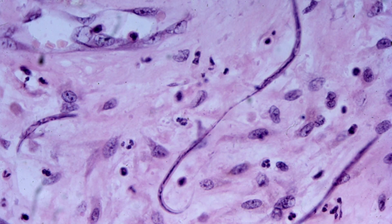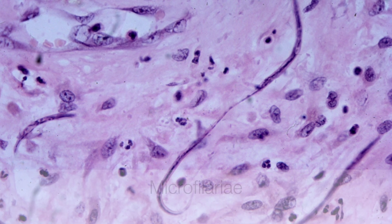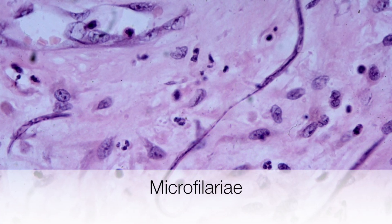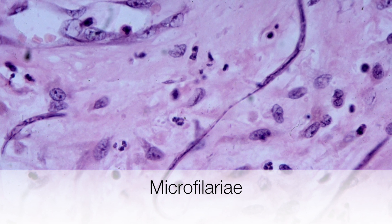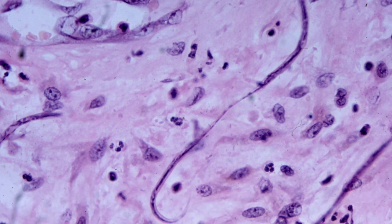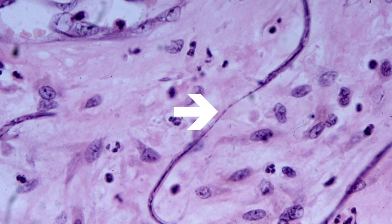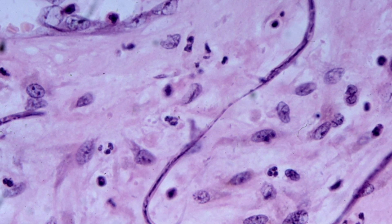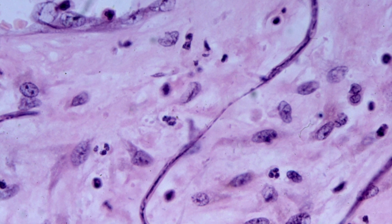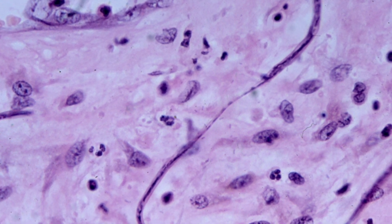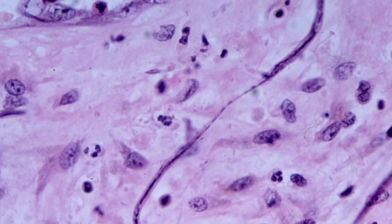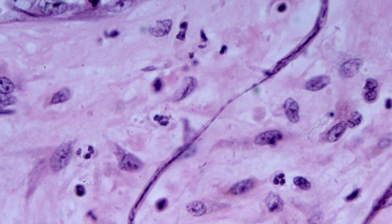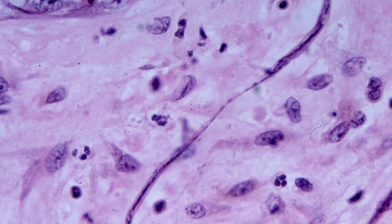This is a skin biopsy from a patient with Onchocercal dermatitis. The microfilariae are the purplish cord-like structures. The inflammatory cells are eosinophil polymorphs, and scattered fibroblasts can also be seen amongst the microfilariae, showing that this lesion is starting to fibrose.